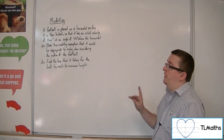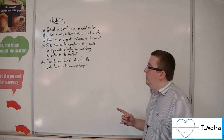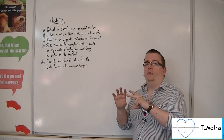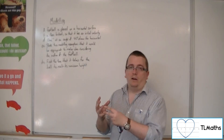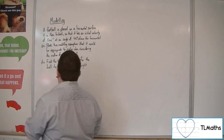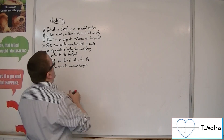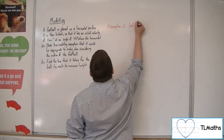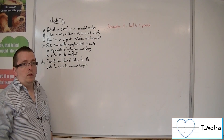Firstly, state two modelling assumptions that it would be appropriate to make when considering the motion of the football. Because we don't want to have to deal with problems about the ball's shape, we can make the assumption that the football is a particle — we can treat it just as a particle moving through the air. So assumption number one: the ball is a particle, so its shape doesn't become something we have to consider.